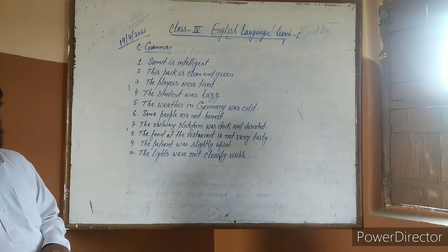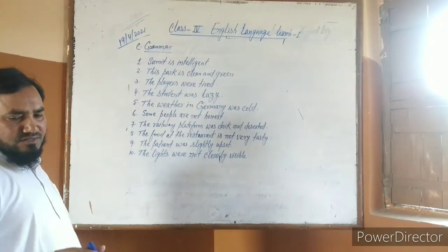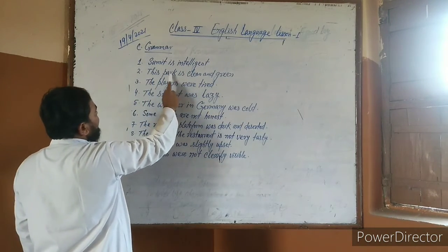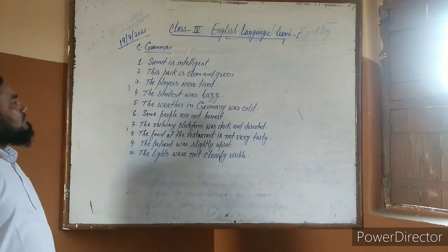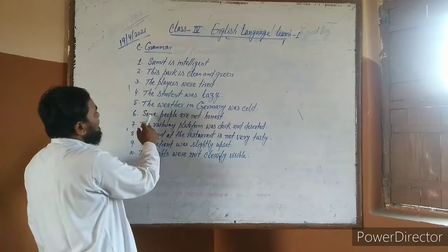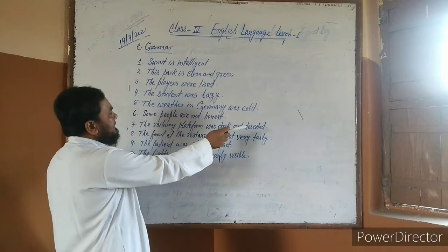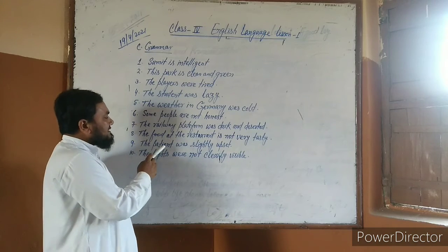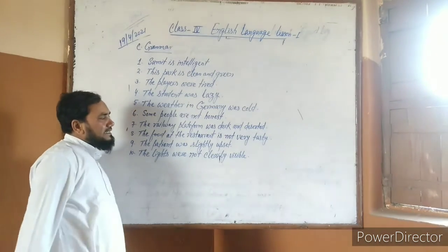This is the section C answer. The sentences made in the description table are: 1. The time is intelligent. 2. This path is clean and green. 3. The players were tired. 4. The student was lazy. 5. The weather in Germany was cold. 6. Some people are not honest. 7. The platform was dark and deserted. 8. The food at the restaurant is not very tasty. 9. The person was slightly upset. 10. The lines were not clearly visible.